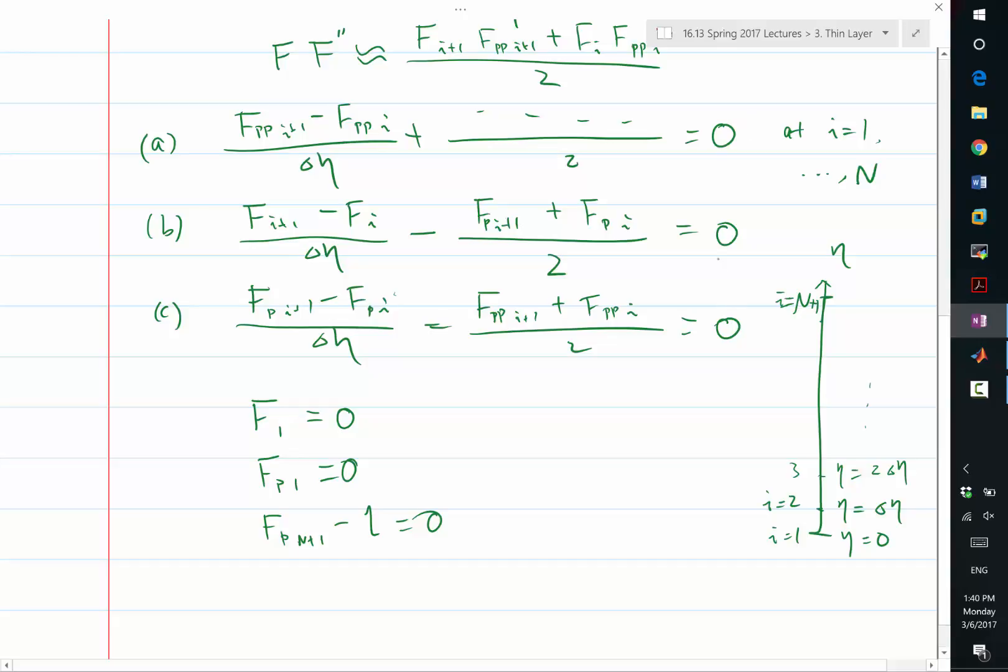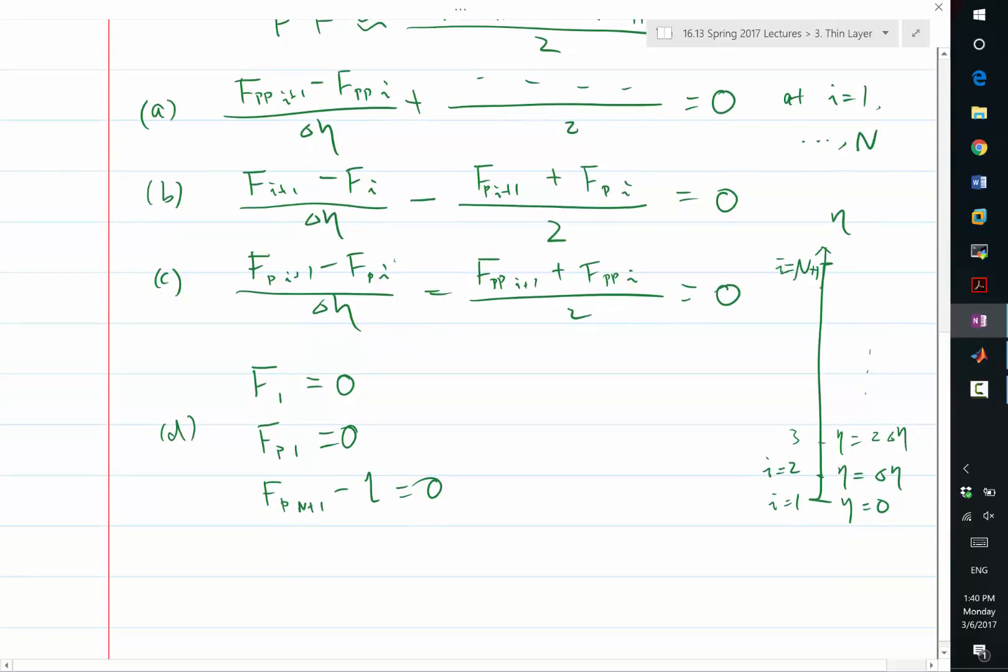So this is very nice because we wrote the whole thing, let me write this as d, because we wrote the whole thing as something equal to 0.